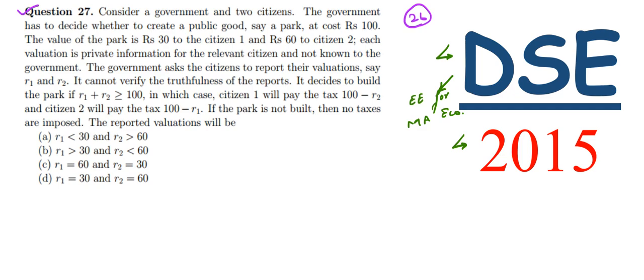Question 27 says consider a government and two citizens. Here we have a government and only two citizens. The government has to decide whether to create a public good, say a park, at cost rupees 100.